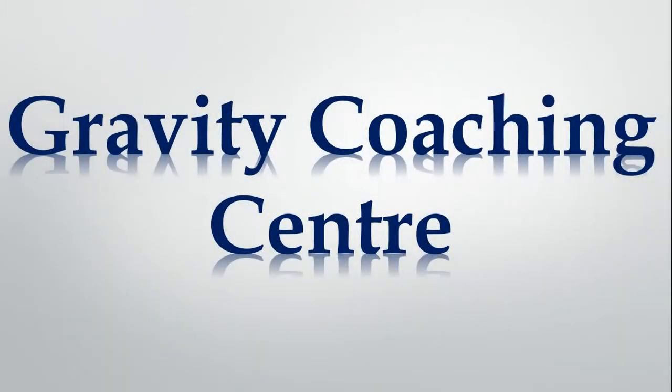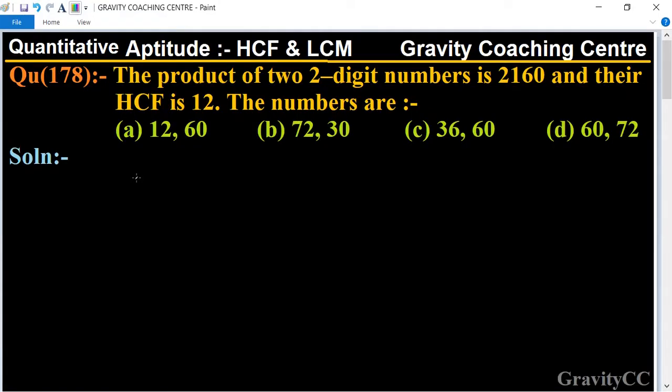Welcome to our channel Gravity Coaching Centre. Quantitative Aptitude chapter HCF and LCM, question number 178. The product of two 2-digit numbers is 2160 and their HCF is 12. So the numbers are - this question is about two 2-digit numbers.